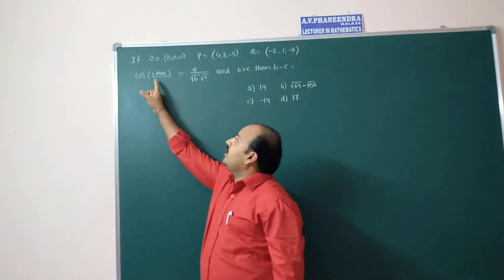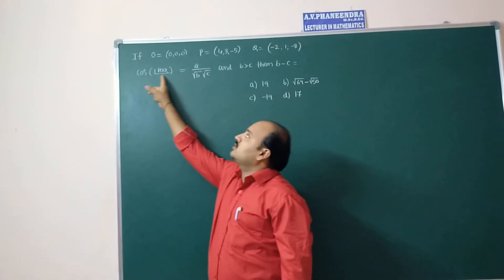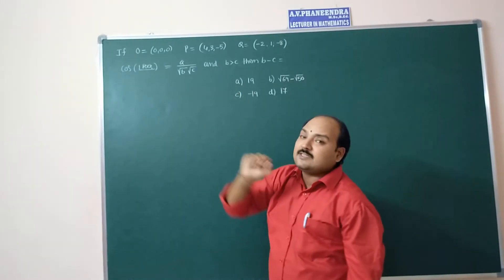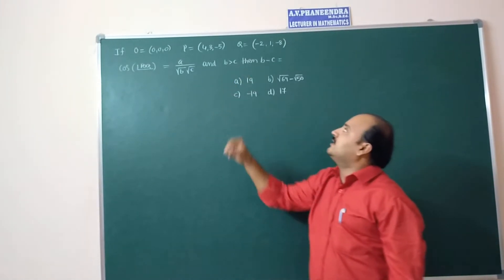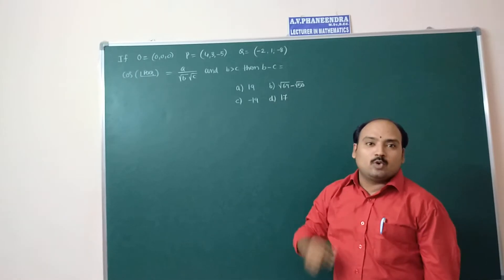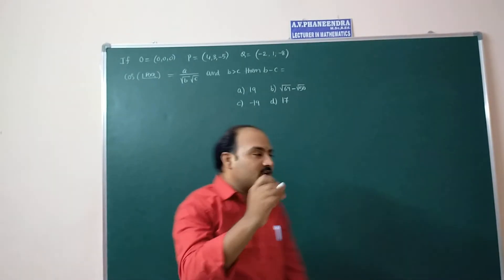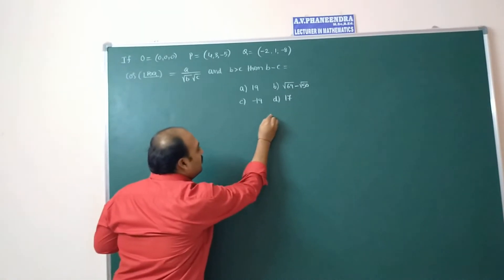And angle between POQ, cos of angle POQ equals a by square root of b into square root of c. And one condition is given: b is greater than c. Then b minus c equals what?